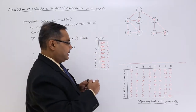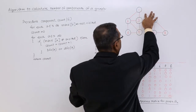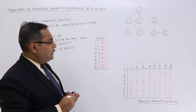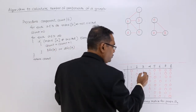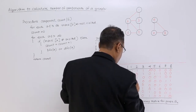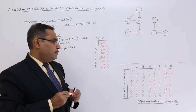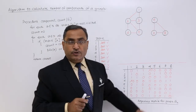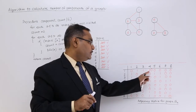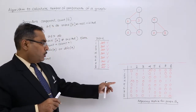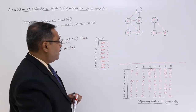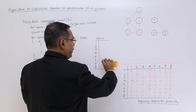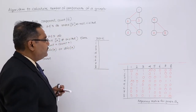Now let us consider that this particular edge is not available. Let me do the required update in our adjacency matrix. I should make location [1][4] equal to 0 and location [4][1] equal to 0, because this edge was between node number 1 and node number 4. So instead of 1, I shall have 0 there. Now the mark array will again get initialized with not visited according to the algorithm.